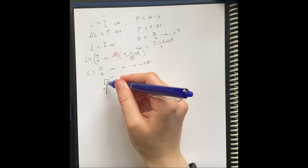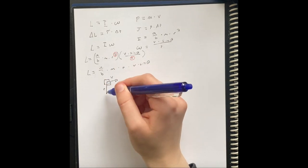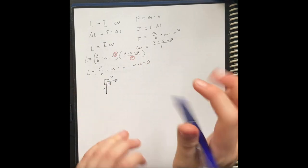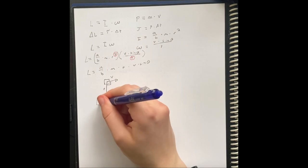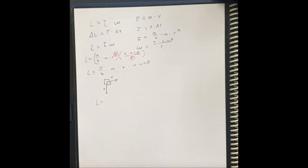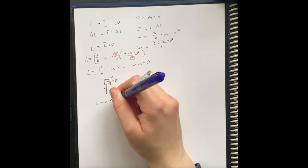And since it is a point mass, because it's basically just like a block rotating around a point, it is just going to be one. So the angular momentum is going to be mass times radius times velocity.